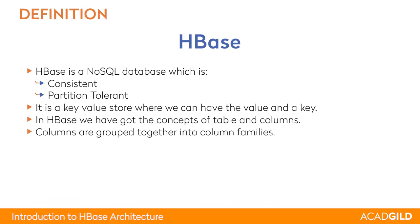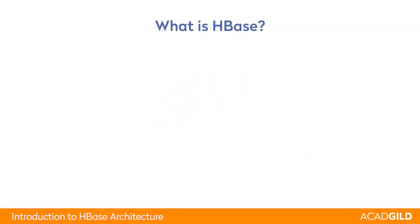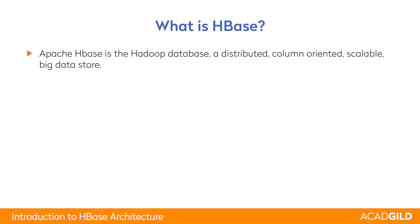The columns in HBase can be grouped together into families if we want to access them. For columns of the single column family, HBase is quite fast and it does not require scanning all the other column families. HBase is a Hadoop database which is distributed, column-oriented, scalable, and is a big data store.